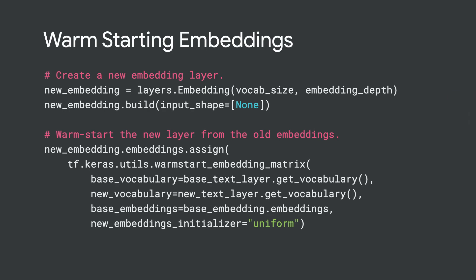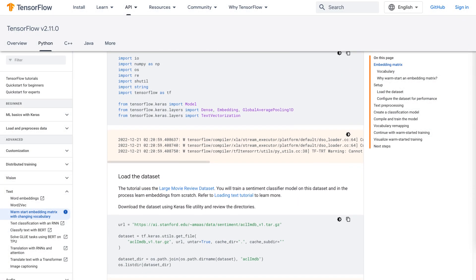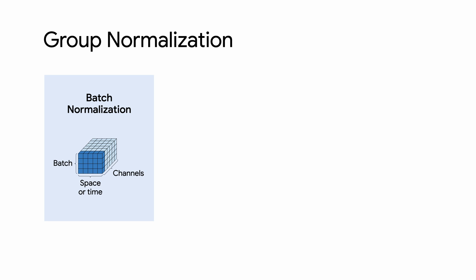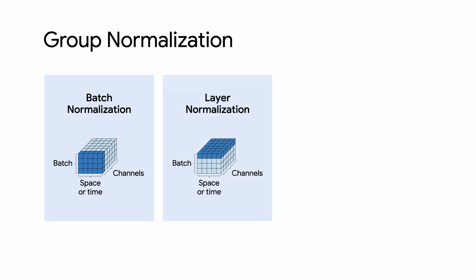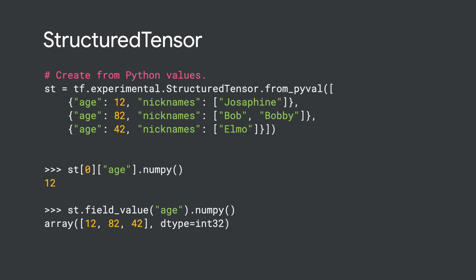TensorFlow 2.11 introduces Warm Start Embedding Matrix, a Keras utility function that makes it easy to update your embedding vocabulary and continue training without missing a beat. We've added a new guide — search for Warm Start Embedding on tensorflow.org. Be sure to check out the new Keras Group Normalization layer. Unlike batch norm, where stats are computed across the whole batch, or layer norm, where they're computed across the whole layer, group normalization splits the incoming channels into groups and performs normalization independently within each channel group. It has been shown to help when training with small batch sizes, where batch norm is less effective. 2.11 also brings a new experimental structured tensor — a collection of structures with the same schema, suitable for storing tabular data like data frames or structured data like protocol buffers.